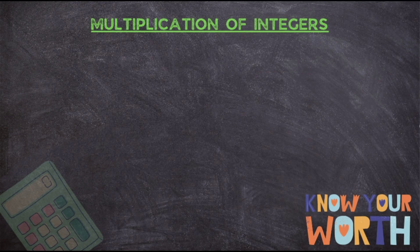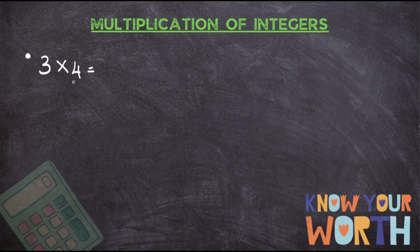The first rule says: when you have two positive numbers, you go ahead and multiply and the answer you will get is a positive number. Here you observe there is three and four with no minus sign before them, meaning they are positive numbers. When you multiply, three fours are twelve, and the answer will be a positive number only.